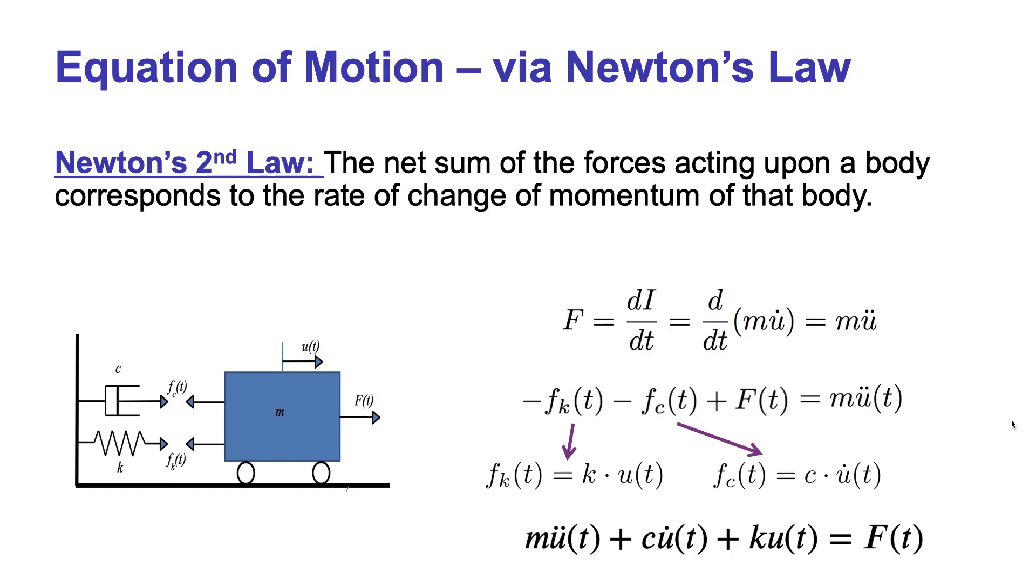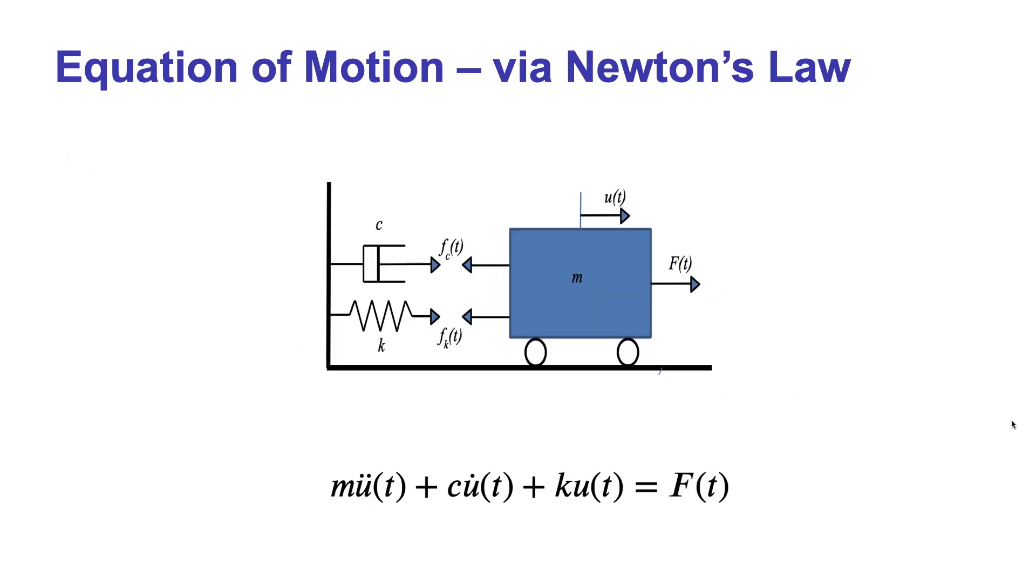Mass times acceleration plus c times velocity plus k times displacement, equal to the external force F, which also changes in time t. The equation we have just derived is the equation of motion. The way we have derived this equation shows that the motion in the system is caused by the lack of equilibrium which results in an acceleration of the mass M.